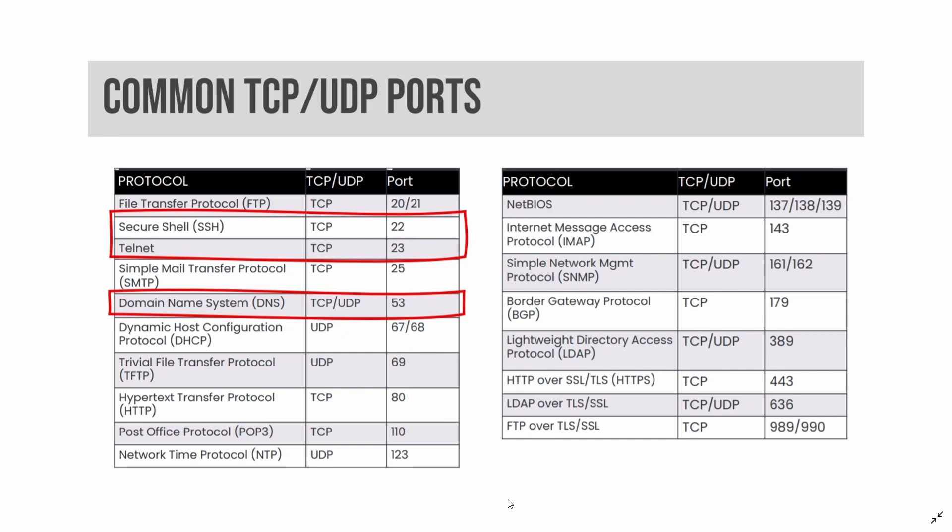SSH includes SFTP and SCP for transferring files. SSH can also be used to securely tunnel other protocols, such as HTTP. SSH servers listen on TCP port 22 by default.